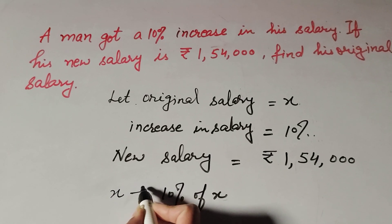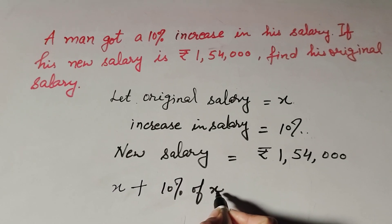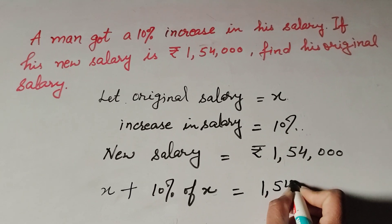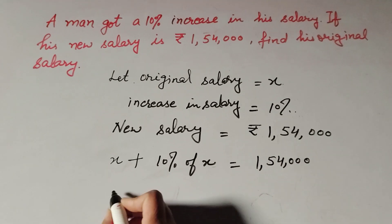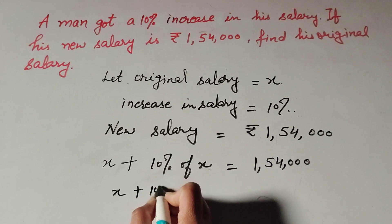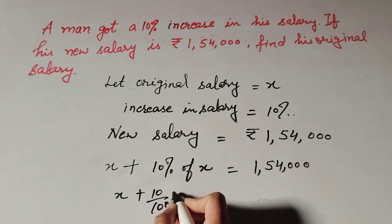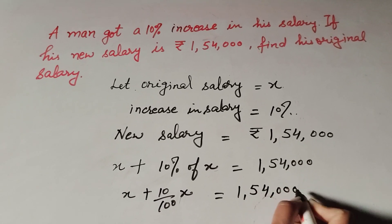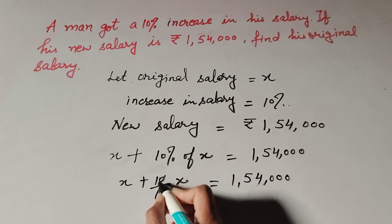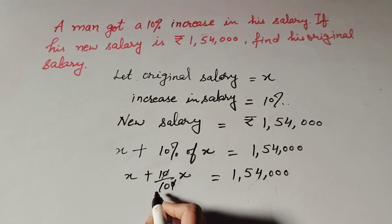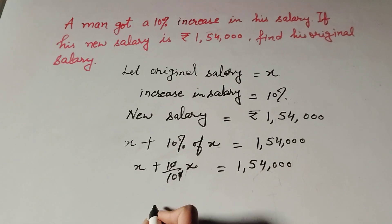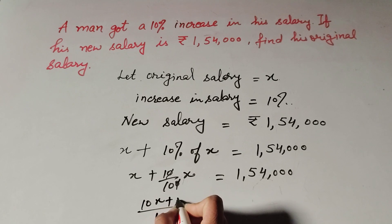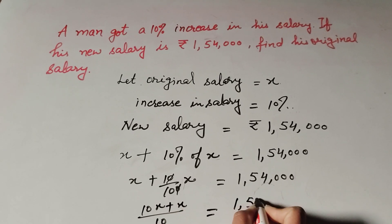His original salary x plus 10 percent of x equals 1 lakh 54 thousand. That is: x plus 10 over 100 multiplied by x equals 1 lakh 54 thousand. Simplifying 10 over 100 gives 1 over 10. Taking LCM, we get 10x plus x over 10 equals 1 lakh 54 thousand.